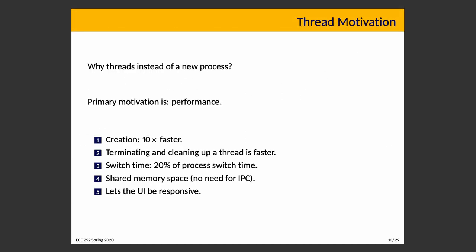Why threads instead of creating a new process? The primary motivation is performance. Creating a new thread is about 10 times faster than creating a new process, which requires a lot more overhead and resources. Terminating and cleaning up a thread is also faster than terminating a process, and it takes less time to switch between two threads within the same process than between two different processes — mostly because less data needs to be saved and restored. In the old Solaris OS, switching between processes was about five times slower than switching between threads.